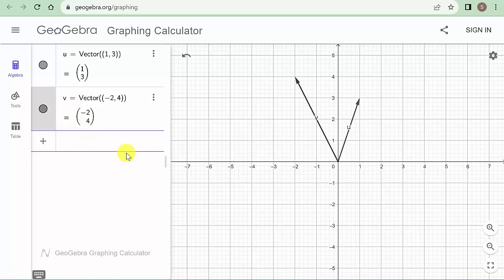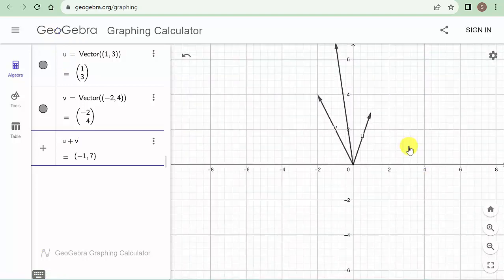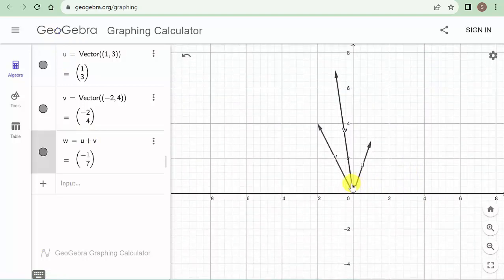So let's suppose I want to add these two vectors. Since it already named the vectors, I can just do u plus v. And there it is. Let me zoom out a little bit and move this down. And you can see there's your resultant vector right there. It draws it in there for you.